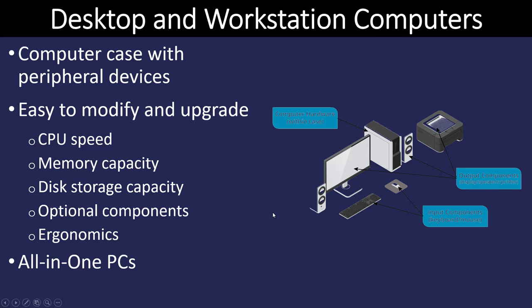A desktop or workstation computer has its components divided out. It's typically what we see in a classroom or at work — a tower, a separate monitor, separate speakers, and a separate keyboard and mouse. They're very popular in businesses, a little less expensive than a notebook computer, and they give the ability to easily modify and upgrade them. We also now have all-in-one PCs, where everything is contained inside the monitor case — a crossover between a workstation and a notebook.